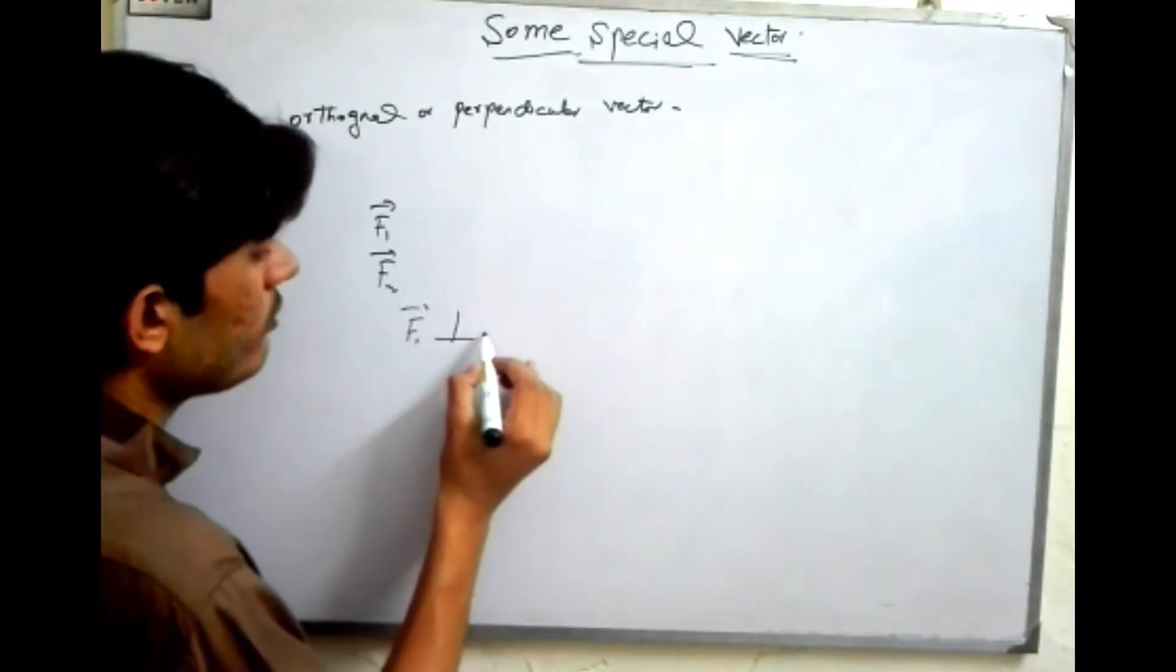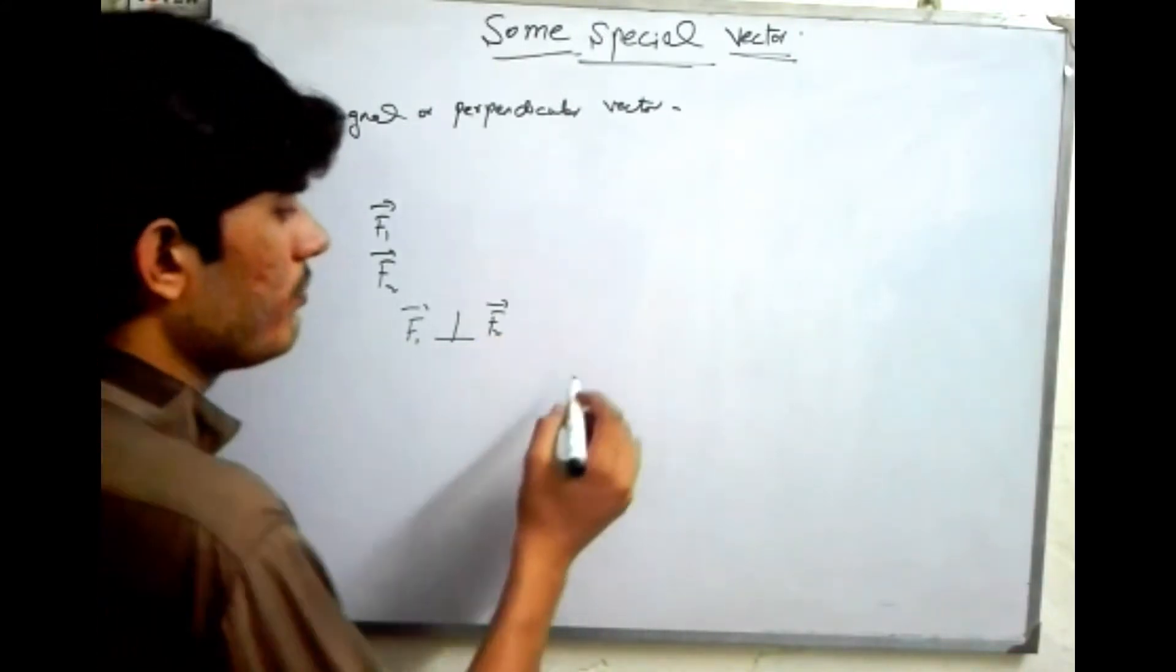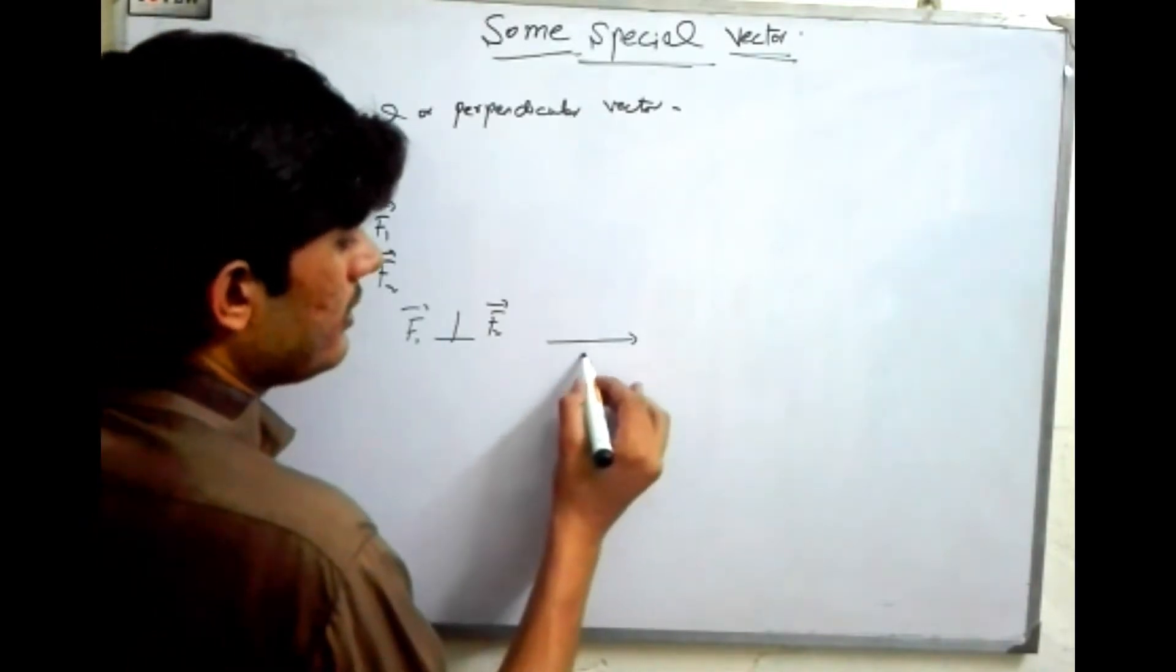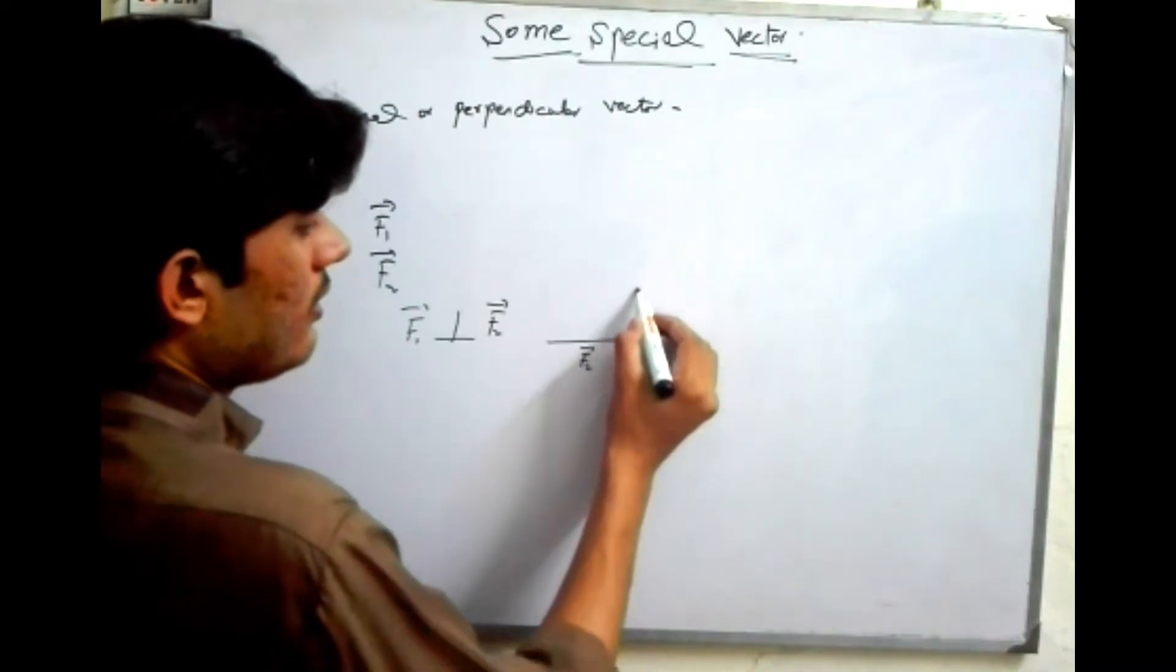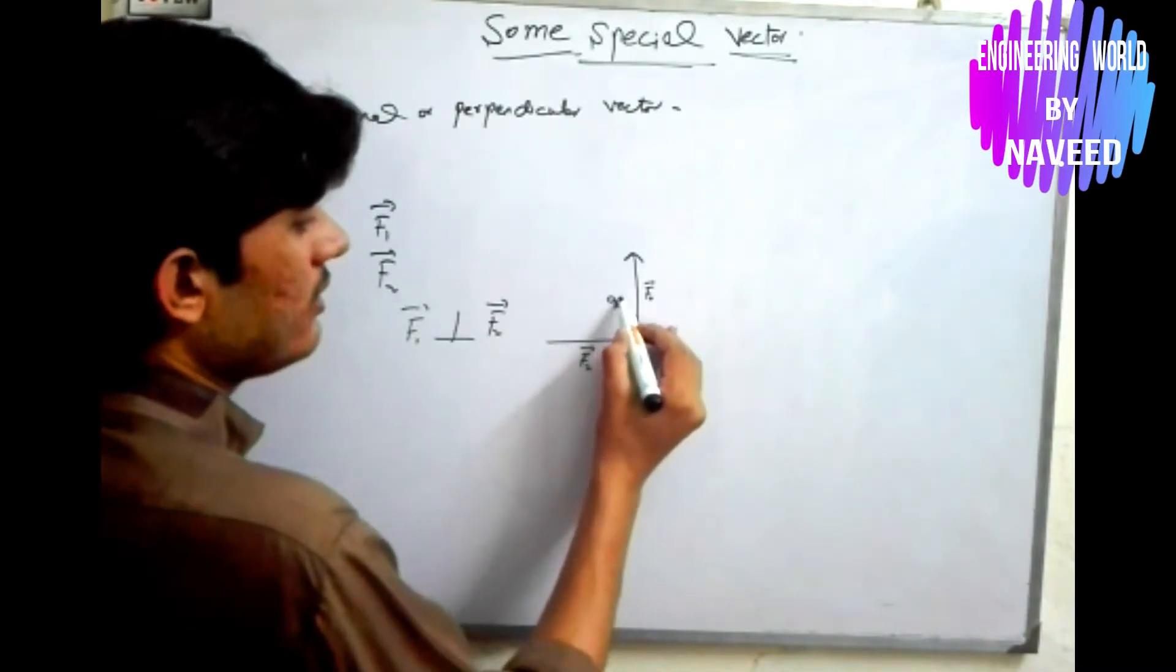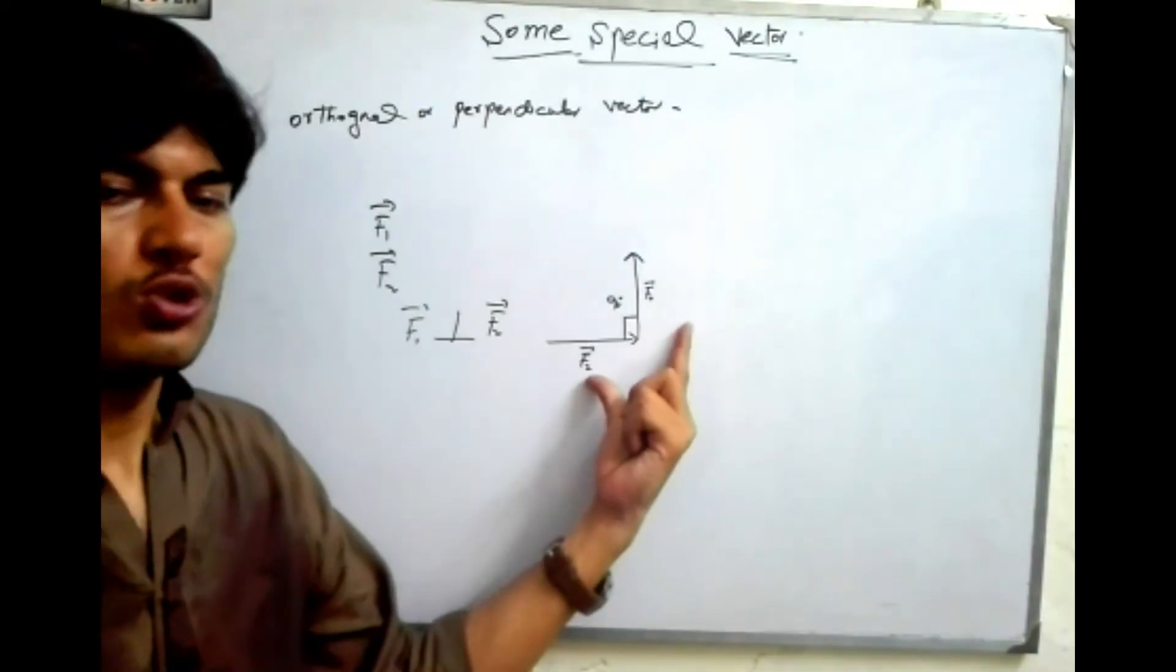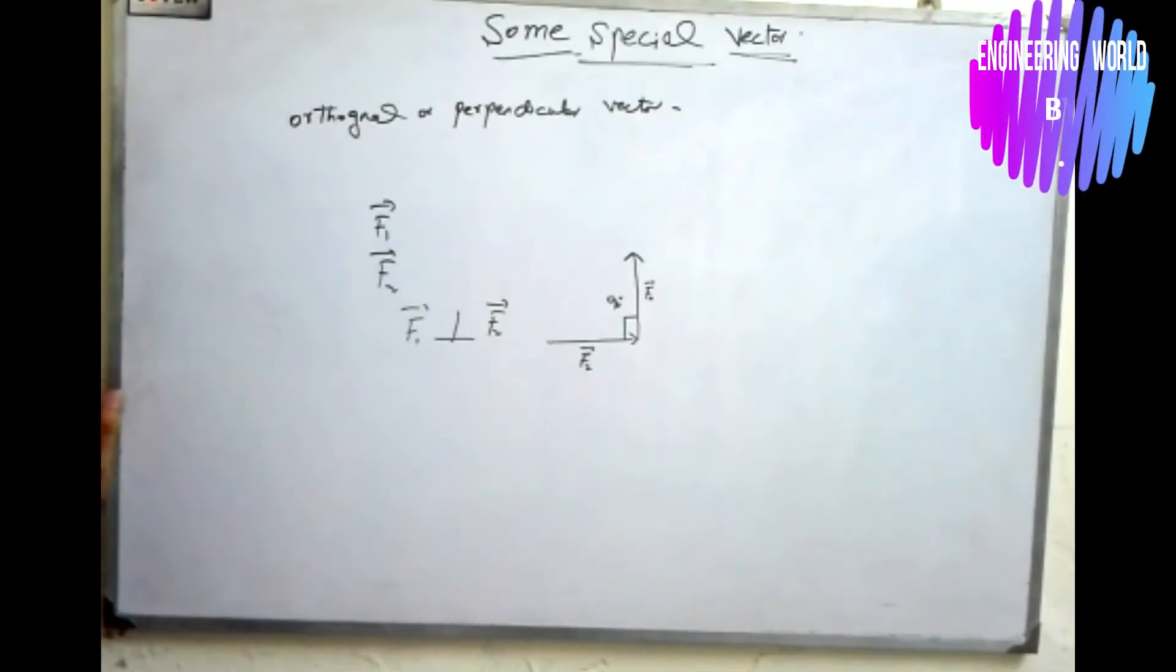If the angle between these two is 90 degrees, let's say we have f1 acting in this direction and f2 acting in this direction, so as these two vectors make an angle of 90 degrees with each other, that's why you can say that these two vectors are perpendicular or orthogonal with each other.